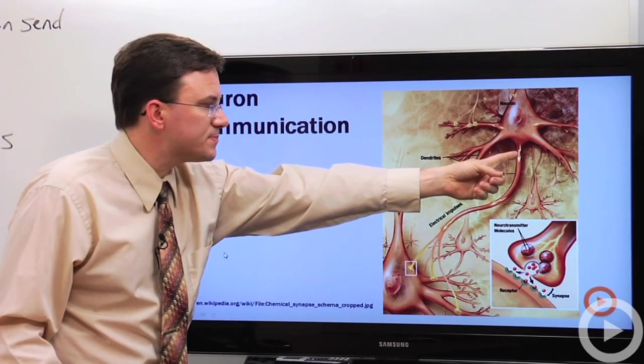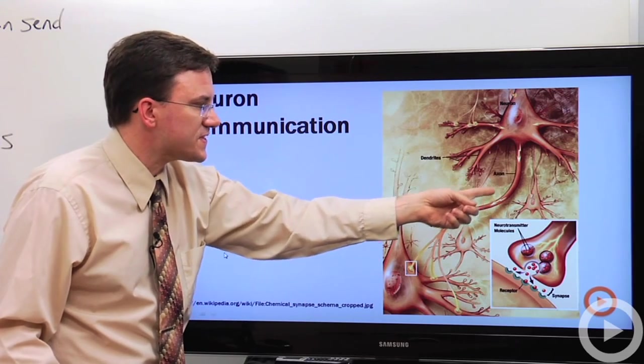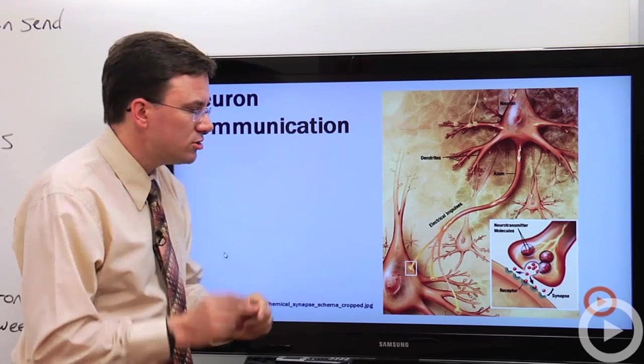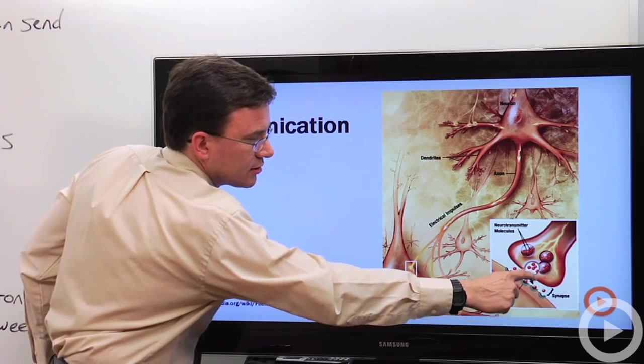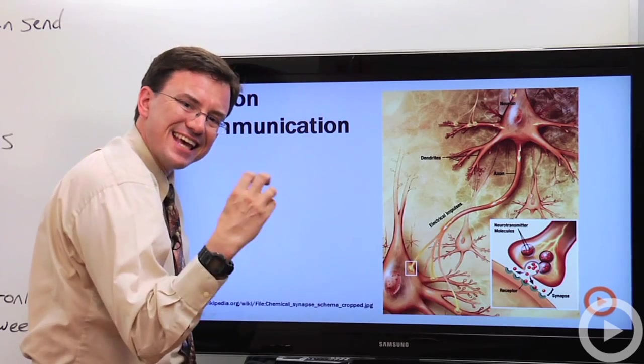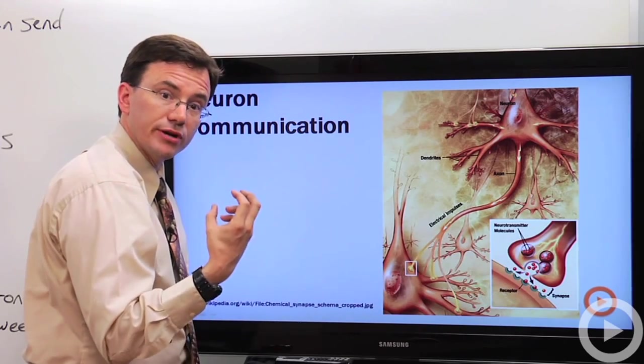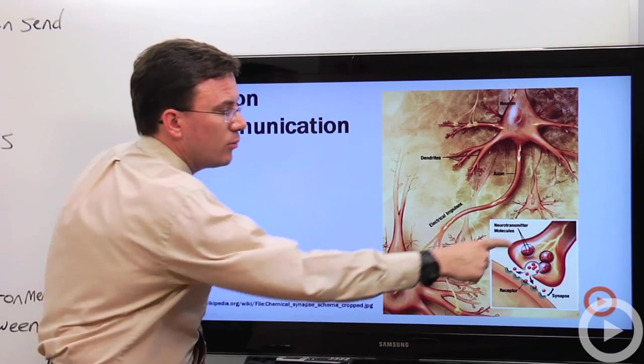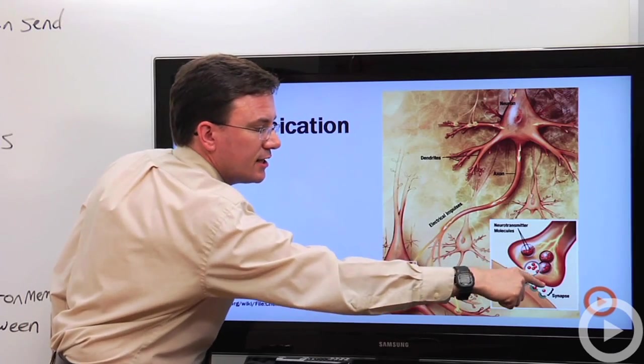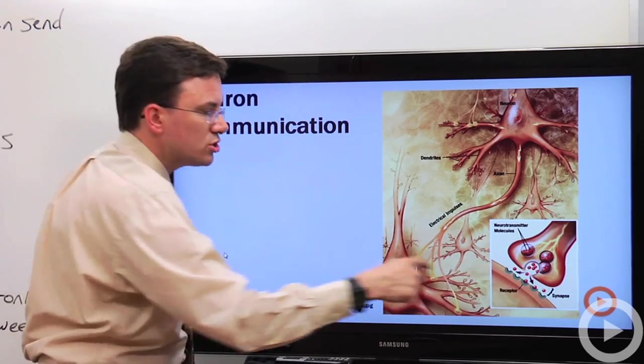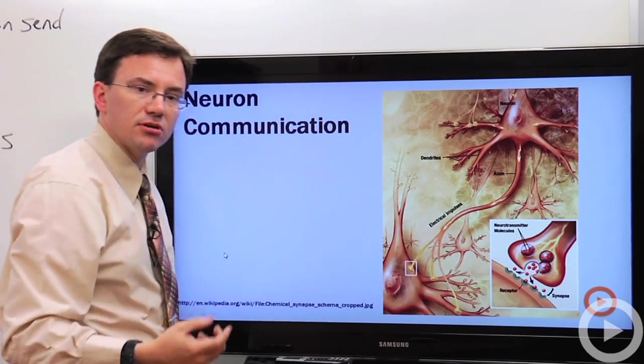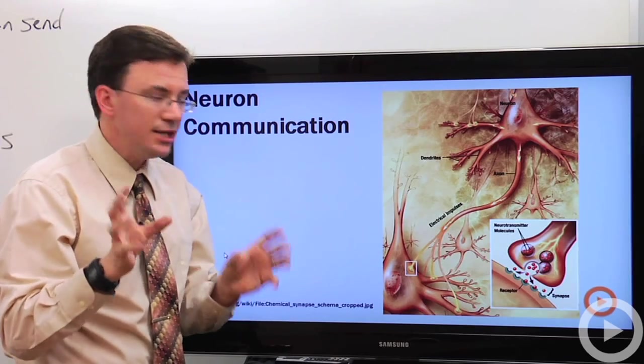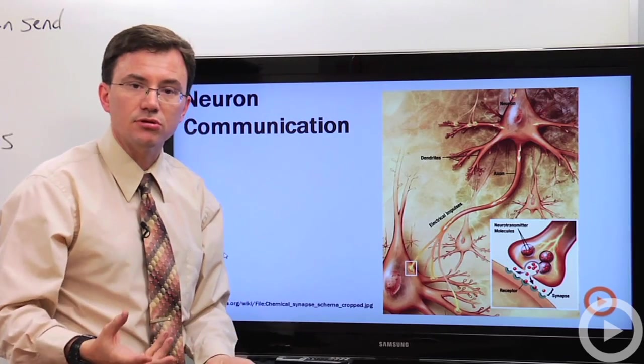And the action potential zips along this axon here until it reaches here. This is a synapse, a connection between a neuron and its target cell. What happens is that you have these sacks of chemicals called neurotransmitters. Some examples of these would be dopamine or acetylcholine. And when the action potential reaches the end here, it causes these sacks to merge with the outer membrane, dumping the chemical out. On the receiving neuron, it has receptor proteins that have the right shape to fit that particular neurotransmitter.